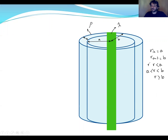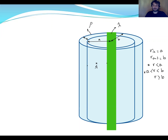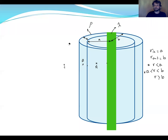First we calculate the field at r less than a — between the rod and this point. The thickness of the road is negligible because it is one-dimensional. Second, we calculate between a and b, meaning inside the body of the shell. Third, at point C where r is greater than b. Let's begin with point A.